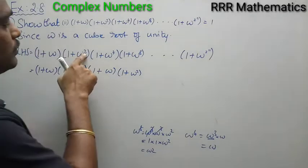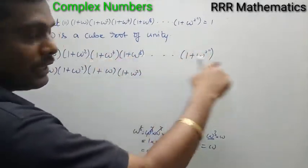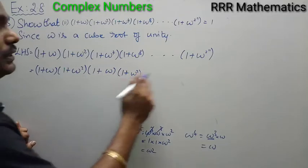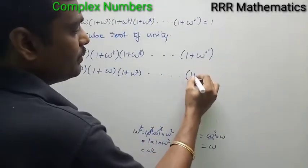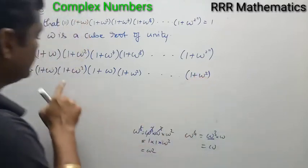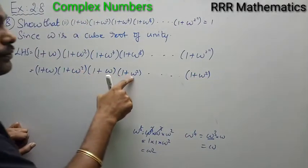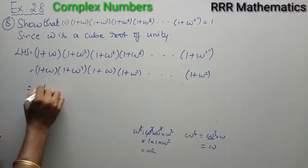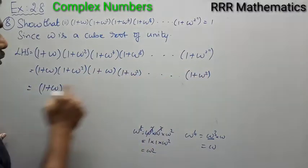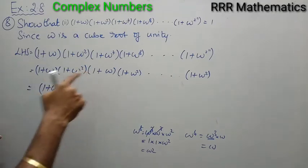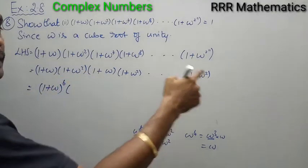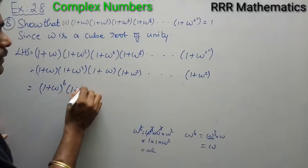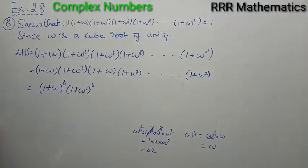The expression has 12 factors total (11 from 2^1 through 2^11, plus the first). Since the factors alternate between (1 + ω) and (1 + ω²), and the last 12th factor is even, it ends in (1 + ω²). So (1 + ω) appears 6 times and (1 + ω²) appears 6 times, giving us (1 + ω)⁶ · (1 + ω²)⁶.